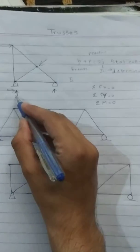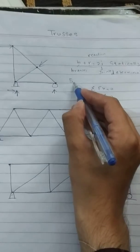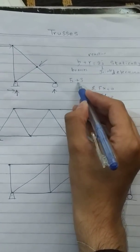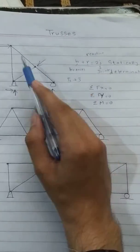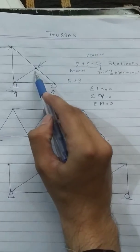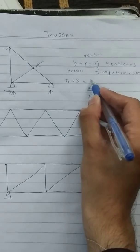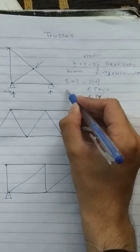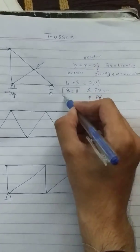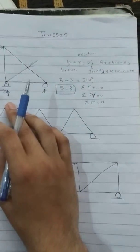r is the number of reactions. A pin support has two reactions: one, two. Roller has one, so three. There are three external reactions. Five plus three is eight. j is the joints: one, two, three, and four joints. Two times four is eight, so eight equals eight. This truss is statically determinate. We can solve it by applying the equations of equilibrium.